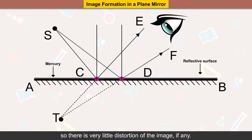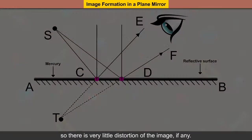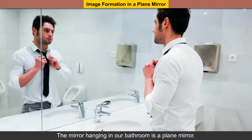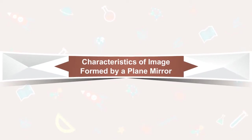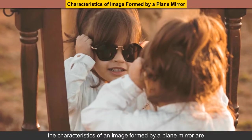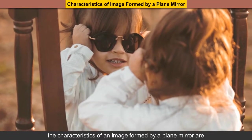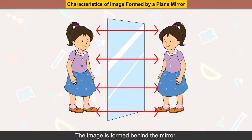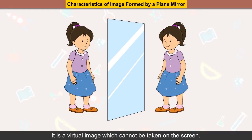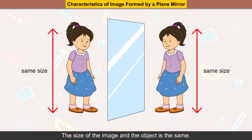So there is very little distortion of the image, if any. The mirror hanging in our bathroom is a plane mirror. Characteristics of image formation by a plane mirror: the image is formed behind the mirror and is a virtual image which cannot be taken on a screen. The size of the image and the object is the same.